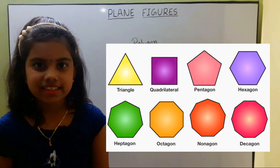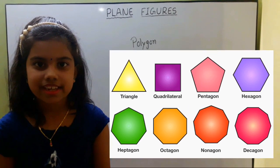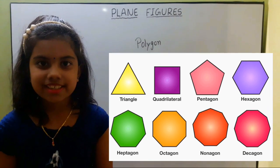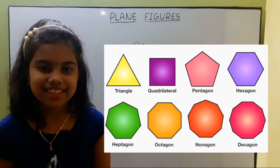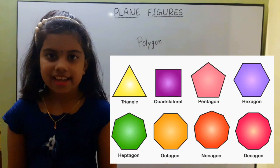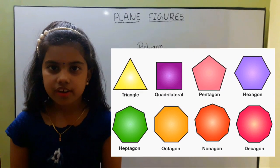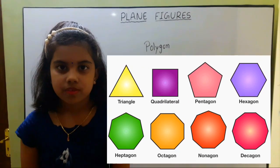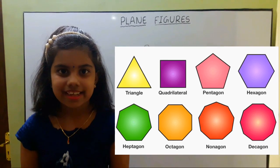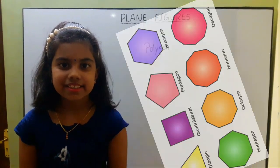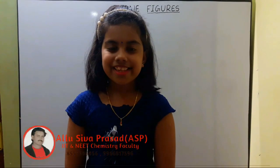Triangle has three sides. Square has four sides. Pentagon has five sides. Hexagon has six sides. Heptagon has seven sides. Octagon has eight sides. Nonagon has nine sides. Decagon has ten sides.